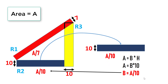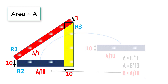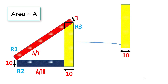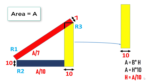In rectangle R2, the height is 10 and the base is A/10. Now consider rectangle R3. In R3, the base of the rectangle is 10 units, and the area equation becomes A equals height times 10, because the height is not given but the base is 10 units. Hence the height of R3 is A divided by 10.